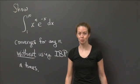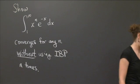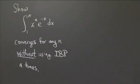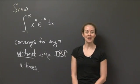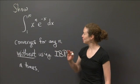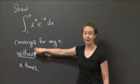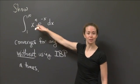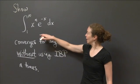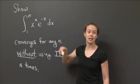I'll give you a little while to work on it, and then I'll be back and show you how I did it. Welcome back. I want to show you how we can show that this integral actually converges for any n, without using integration by parts to kill off powers of x. The integral is from 1 to infinity of x to the n times e to the minus x dx.